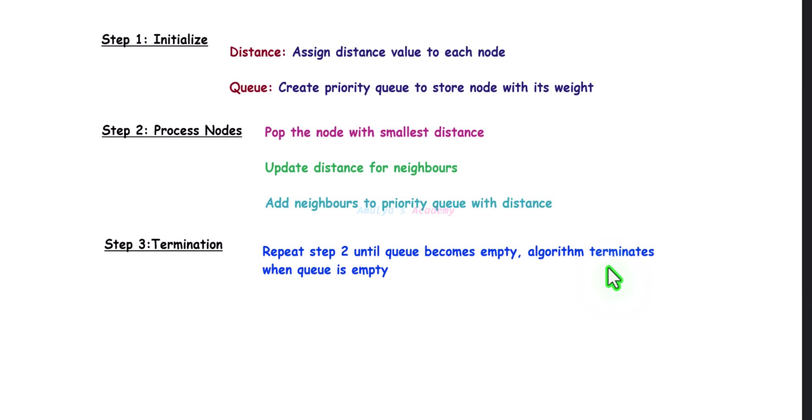The last step is termination. The algorithm terminates when the priority queue is empty, at which point we will have the shortest distance from the source node to all other nodes.